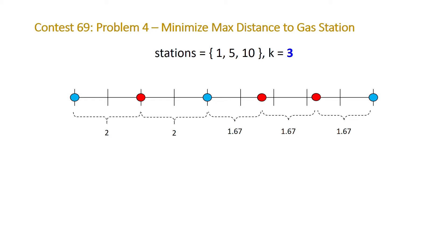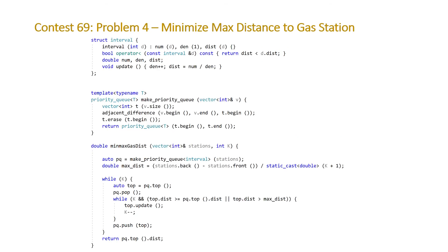And we'll use a priority queue in order to always have access to the interval that has the maximum distance. So let's take a look at our code. You can see here at the top is the struct that I just described. So we have our three values: our numerator, our denominator, and the distance.